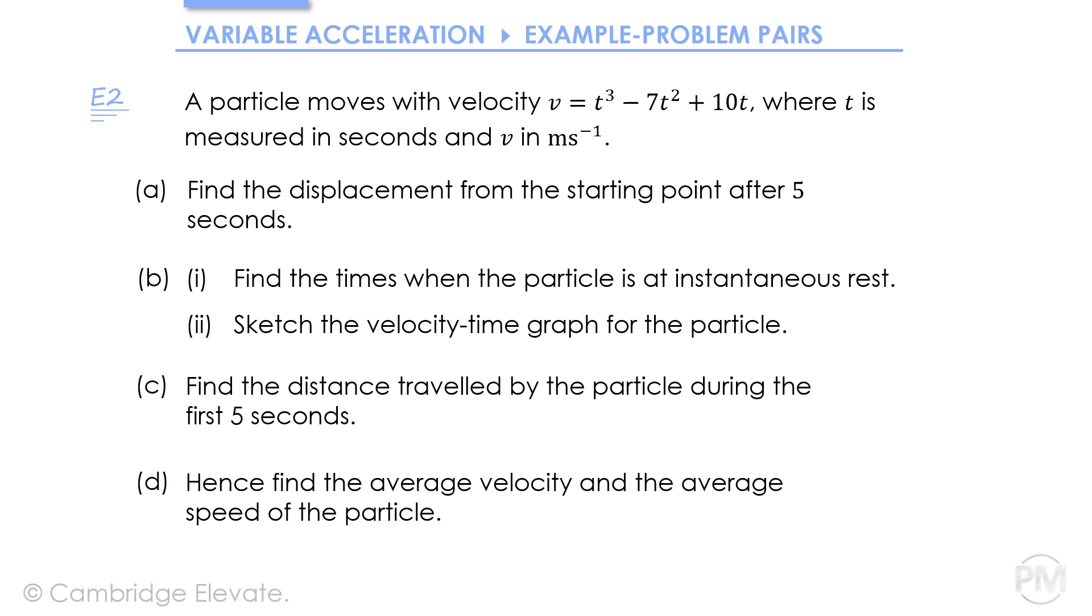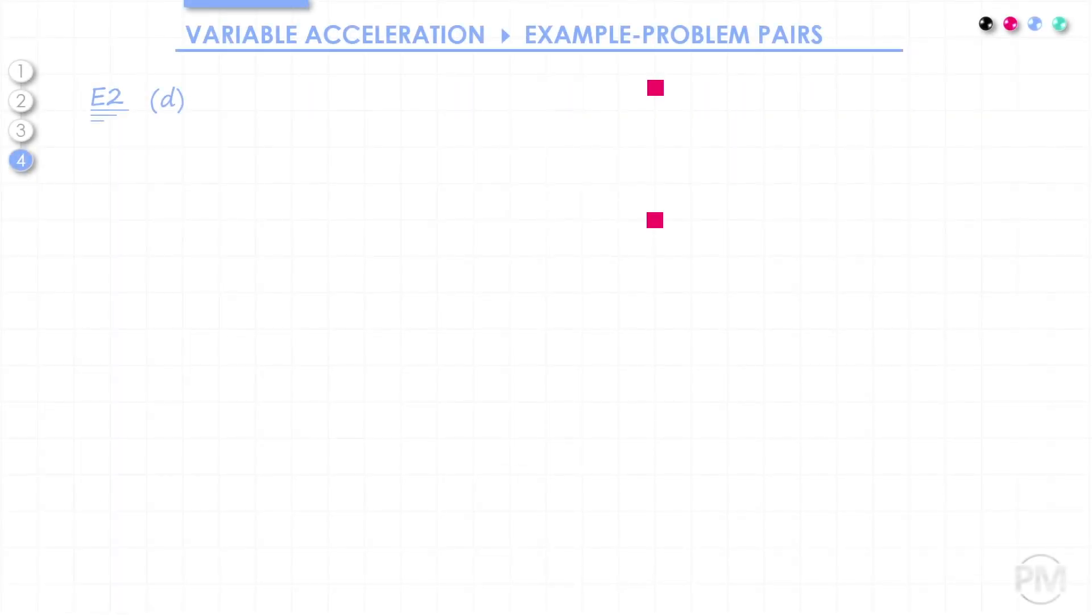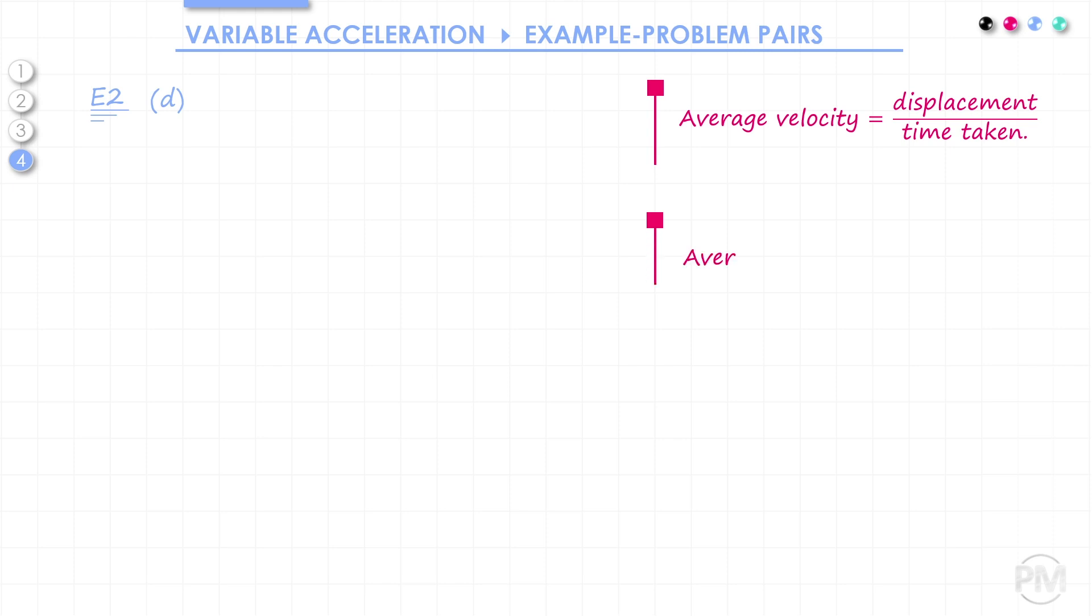Finally, in part D, we're going to find the average velocity and the average speed of the particle. So let's have a look at what the difference is between calculating average velocity and average speed. To answer this question, we need two formulae. We have the average velocity is displacement over time taken, and we have average speed is distance over time taken.